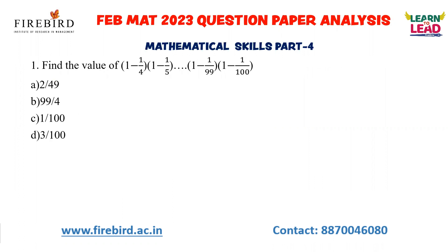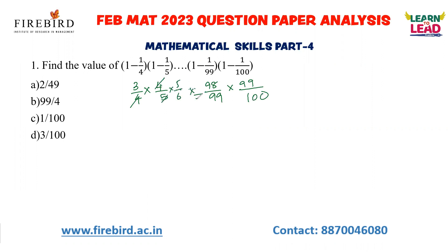Now let us see the first one. Find the value of (1 − 1/4)(1 − 1/5)... up to (98/99)(99/100). It is very simple. What is 1 − 1/4? It is 3/4. 1 − 1/5 is 4/5, and so on. The 4s, 5s, and subsequent terms cancel telescopically — 98 cancels and 99 cancels — leaving 3/100 as your answer. It is very simple to crack, but you have to use your practical knowledge and basic sense.